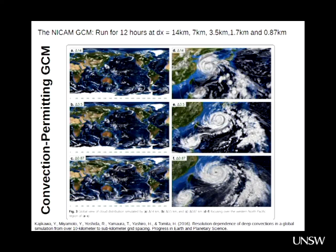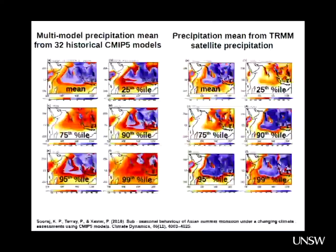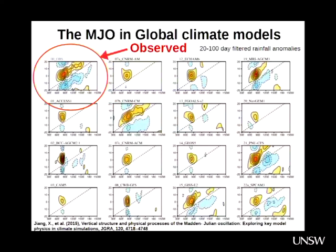There was a comparison of MJO performance in different models — one atmospheric-only and one coupled — and the coupled model was much better, even though the MJO is thought of as almost an atmospheric-only process. I can't explain why it's much better in the coupled model, sorry.